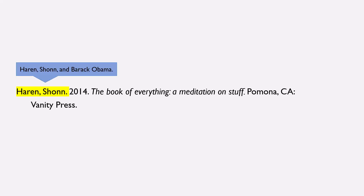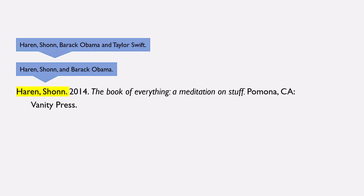But what happens when there's more than one author? The first author is formatted last name, comma, first name, comma, then you write the word 'and' followed by the second author whose name is formatted first name, last name. So in this case: Heron, comma, Sean, comma, and Barack Obama. If there are three authors, you format the first two authors' names the same way, but instead of 'and' you just have a comma between the first two, and the word 'and' goes after the second author with the third author's name also formatted first name, last name. You always end with a period. So in this final case, it would be Heron, comma, Sean, comma, Barack Obama, and Taylor Swift.